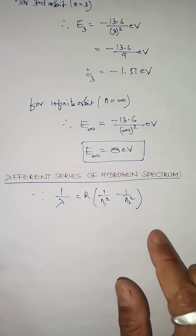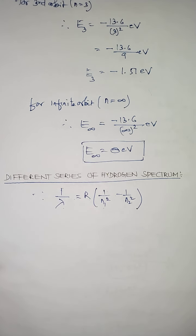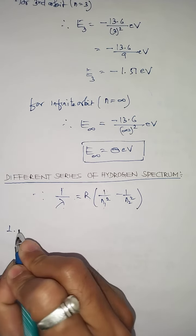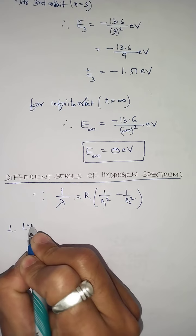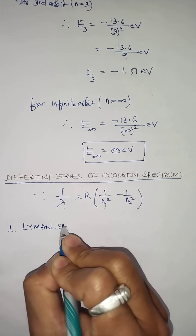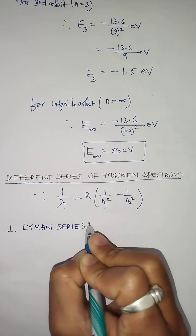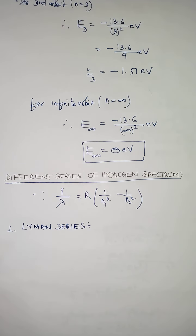Now this relation can be utilized for studying the different series of hydrogen spectrum. The first series is called the Lyman series — named after the scientist Lyman who observed this series of the hydrogen spectrum.